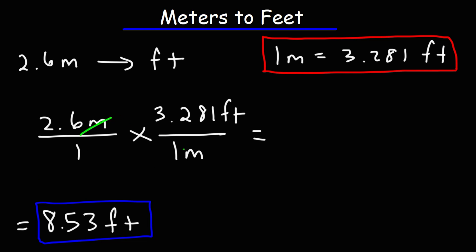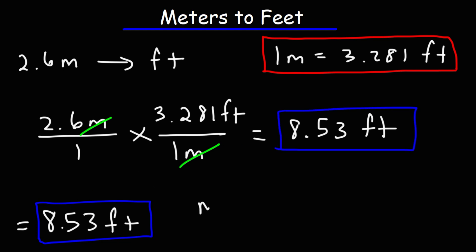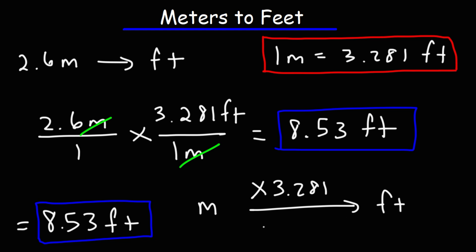We can cross out the unit meters, so it's simply 2.6 times 3.281, and we get the same answer: 8.53 feet. So if you want to go from meters to feet, simply multiply by 3.281 — but you've got to commit that to memory. If you want to go from feet to meters, divide by 3.281. Now you know how to go from meters to feet and feet to meters directly.